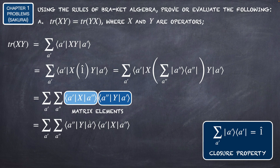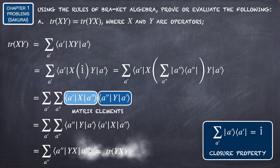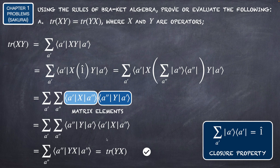These terms are matrix elements, so they are numbers and we can rearrange them. We write ⟨a''|Y|a'⟩ first and then ⟨a'|X|a''⟩. Now we can recognize the summation over a' of |a'⟩⟨a'| as the identity, giving us the summation over a'' of ⟨a''|YX|a''⟩. This is the sum of diagonal elements of the matrix YX, which equals the trace of YX. We have proved that Tr(XY) = Tr(YX).